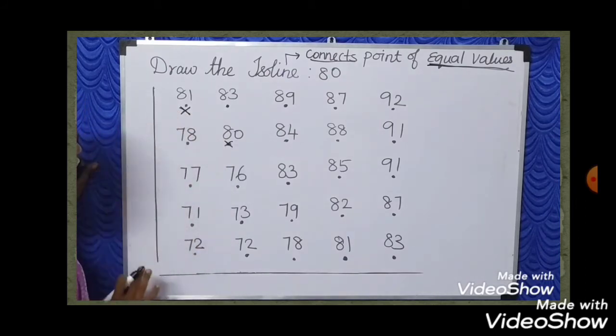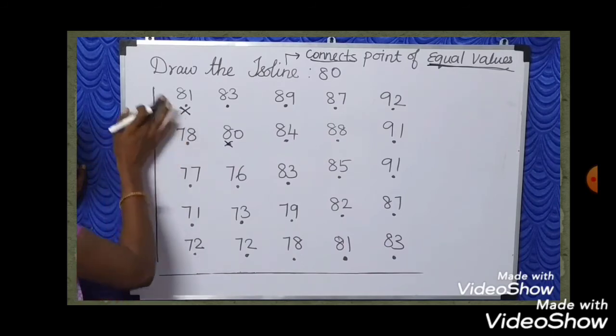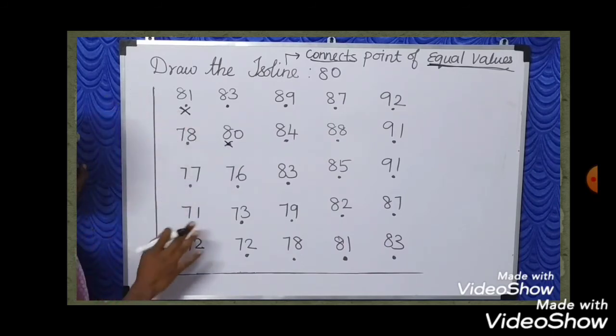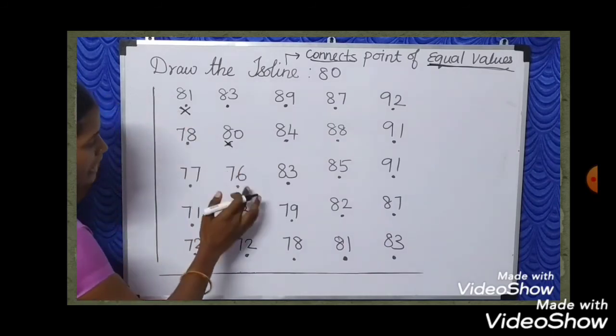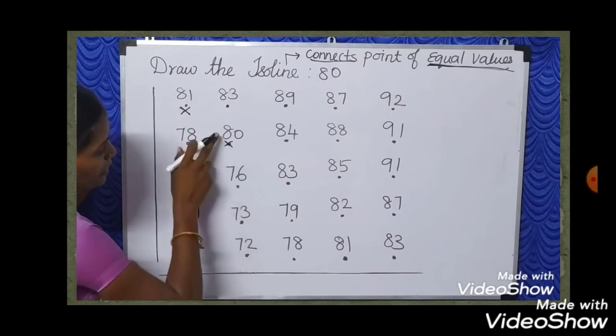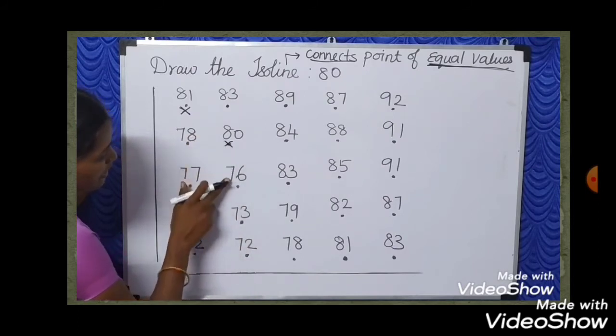The value in this position is equal. The values that are not equal stop here. At the bottom, the number is 70.